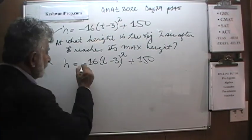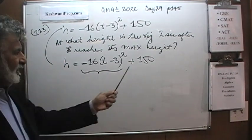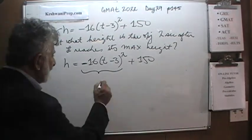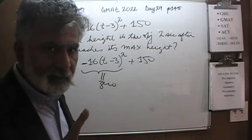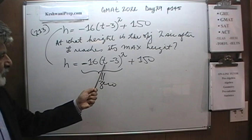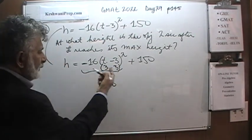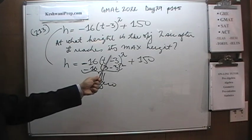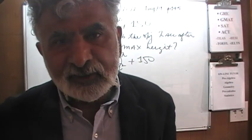This quantity has a negative in front of it, which means it is always taking something away from 150. The maximum height of 150 is reached when this term equals zero — and that happens when T = 3, because (3 − 3)² = 0. So the maximum height is reached at T = 3, and we are looking for the height 2 seconds after that, which is T = 5.